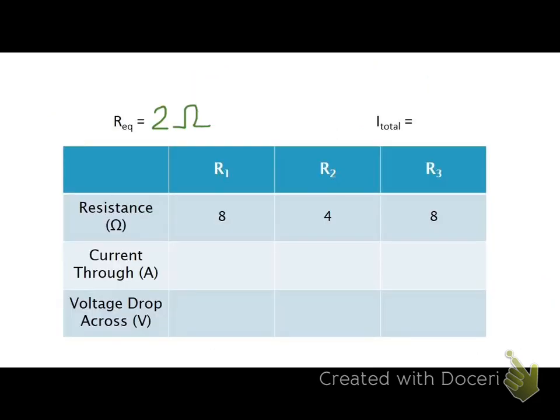I can now find the total current using, once again, you guessed it, V equals IR. So I is V over R, and I'm looking at 24 volts divided by two ohms of equivalent resistance. That battery is going to be spitting out 12 amps of current.